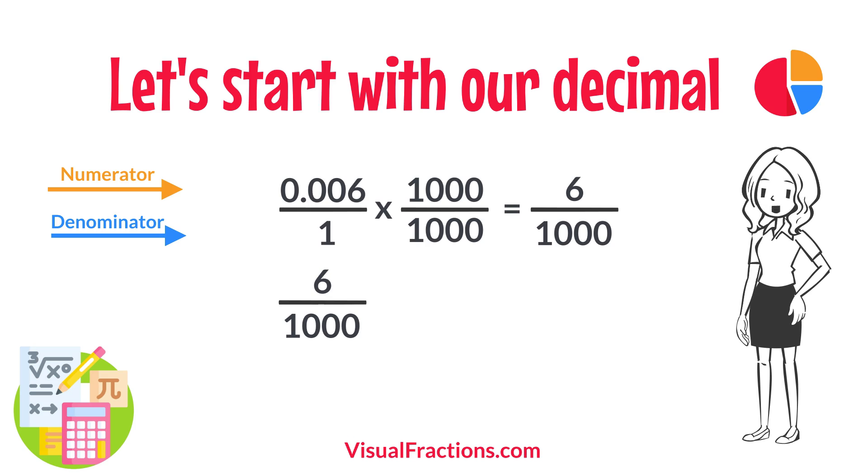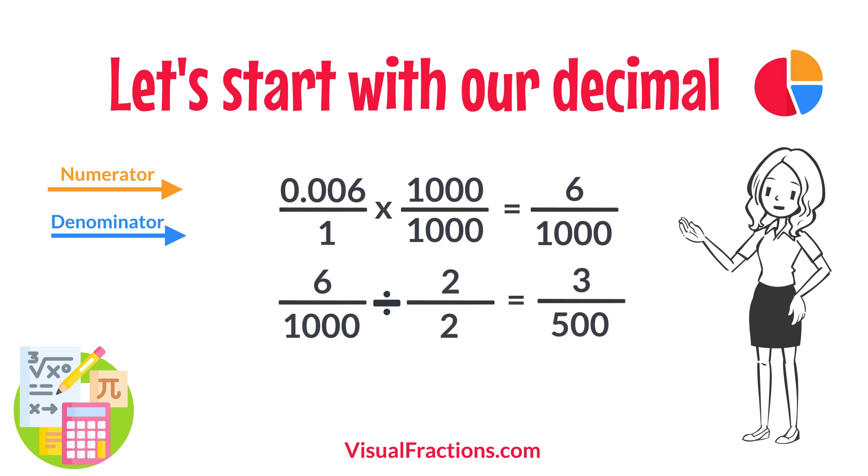Next, we simplify. Both the numerator and the denominator in 6 1,000ths can be divided by 2, the greatest common divisor. Divide 6 by 2 to get 3, and divide 1,000 by 2 to get 500.